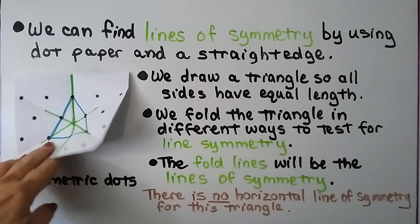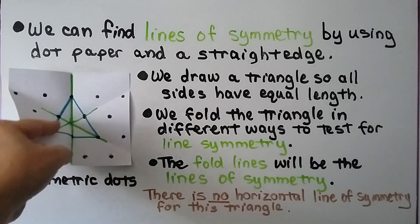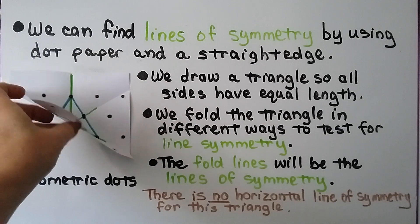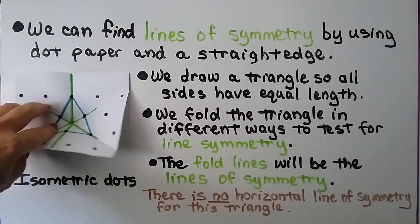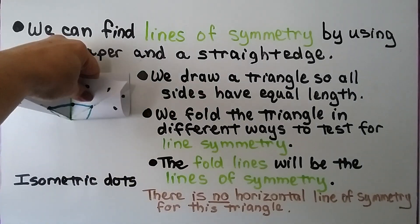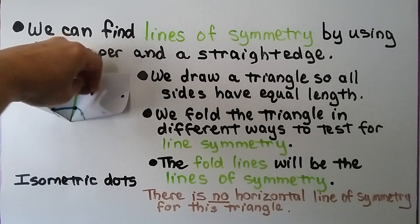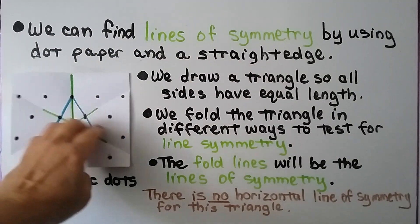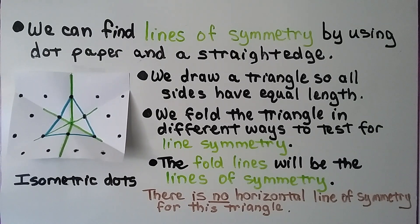We can fold it several ways diagonally. However, if we fold it horizontally, it wouldn't make a mirror image because one side is wider and the other narrower. So this triangle does not have a horizontal line of symmetry.